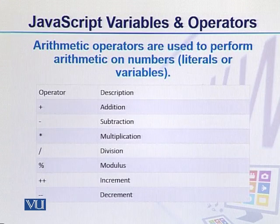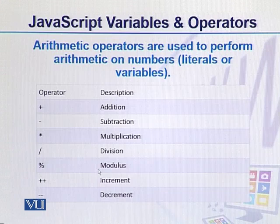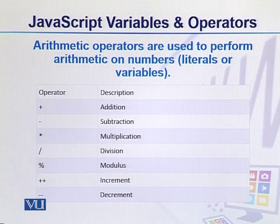We have multiple arithmetic operators in JavaScript: plus for addition, minus for subtraction, star for multiplication, slash for division, modulus to find remainder, double plus for increment by one, and double minus for decrement by one.